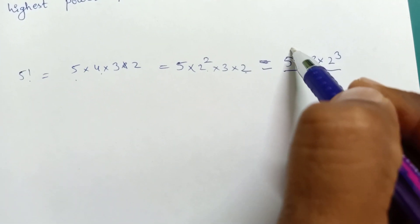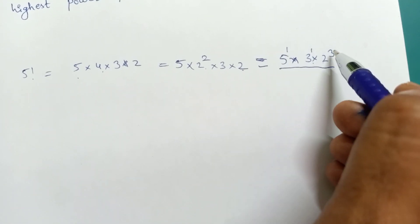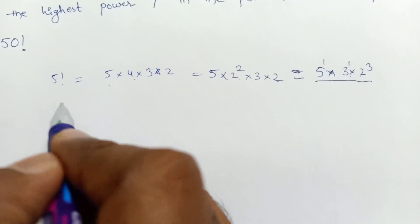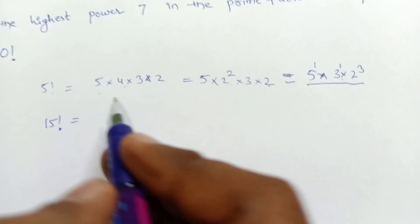This is the prime factorization of 5 factorial. In this prime factorization, there is 5 to the power of 1, 3 to the power of 1, and 2 to the power of 3.